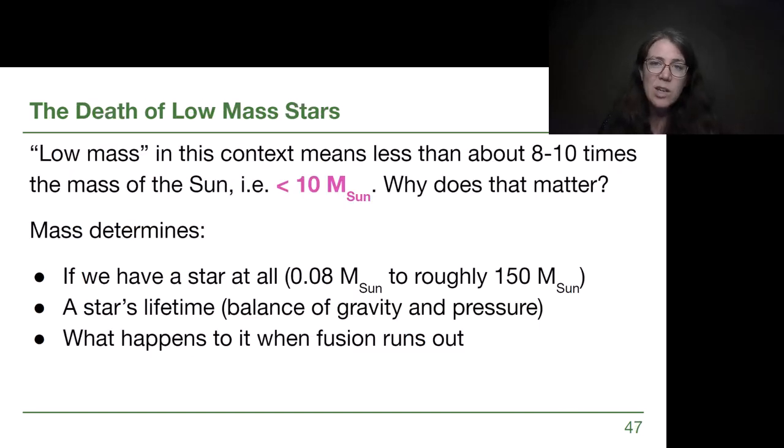So low mass in this context typically means a cutoff between about 8 and 10 times the mass of the sun, so we'll round that to be less than 10 times the mass of the sun, or less than 10 solar masses. So let's talk about why that matters.